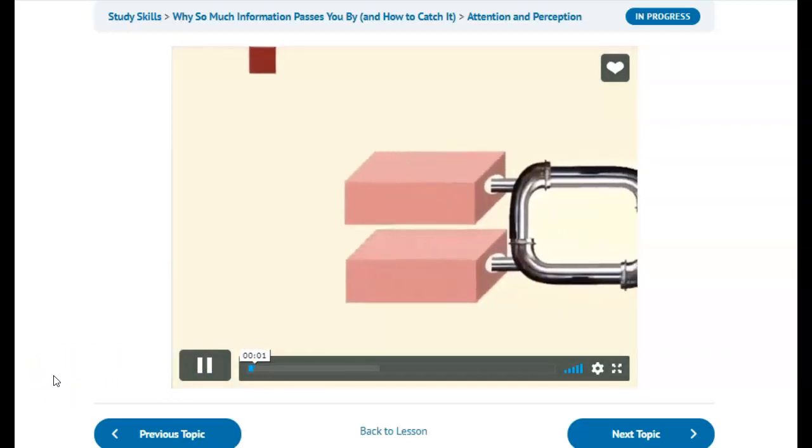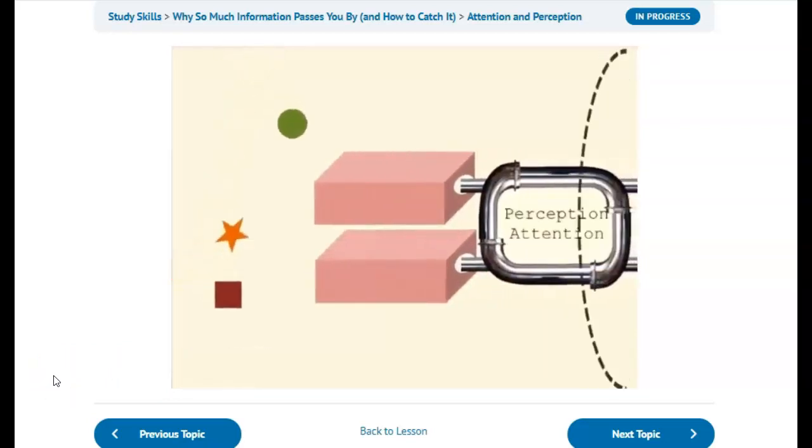Our sensory memory stores receive many more signals from the outside world than we can process. Our information processing system selects the signals we think are most important to continue working with in short-term memory. This activity is called attention, as when a teacher says, 'Pay attention because what I'm saying is important and will be on the test.'